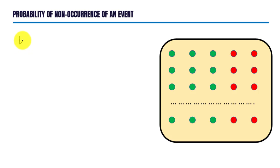Let us define event E of getting green circle. Then non-occurrence of this event is denoted by E bar, not getting green circle.